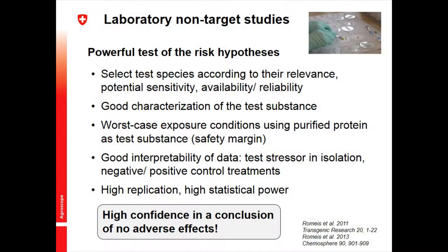We can also select species available in large quantities and quality with validated test protocols. You know what you are testing in your laboratory assays — typically a purified, well-characterized BT toxin with known purity and bioactivity, mixed into an artificial diet and fed to your non-target species. You can provide worst-case exposure conditions, testing doses 10 or 100 times or more higher than what insects would be exposed to in the field — which adds a safety margin to your assessment.